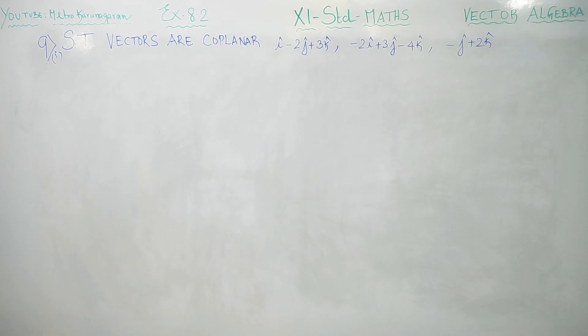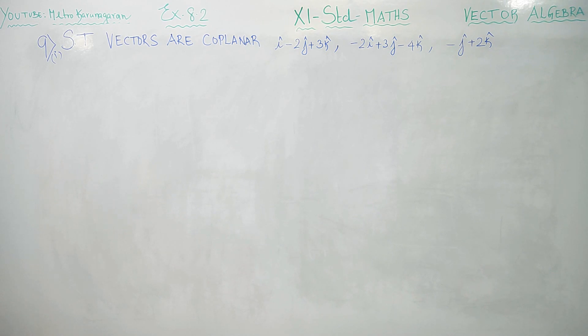Dear Levin Standard students, in exercise number 8.2, sum number 9, first subdivision: show that the vectors are coplanar.